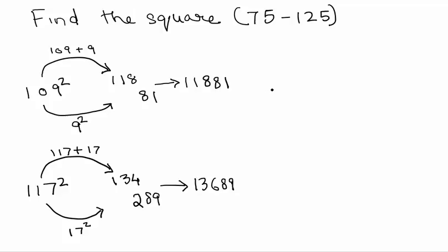Now, if you take a number that's below 100, say we take 89 square. So, now, 89 minus 100 is minus 11. So, here, instead of adding the 11, we'll subtract the 11. So, what we get is 78.